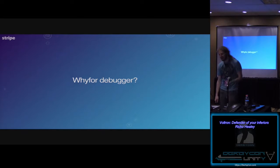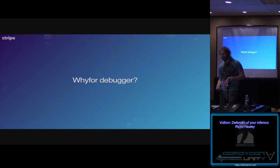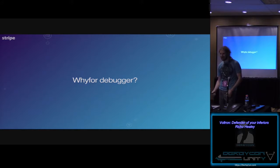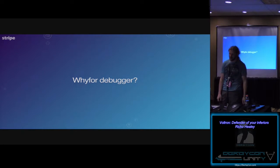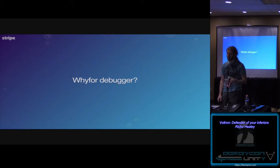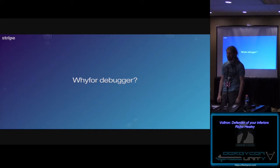So why even use a debugger in the first place? Broadly, you can divide debuggers into two categories: static analysis tools like IDA, Hopper, Capstone, and dynamic debugging tools like GDB, LLDB, WinDbg, OllyDbg. In general, the two main use cases for using a debugger are finding bugs for the purposes of exploiting them, or finding bugs for the purposes of killing them.